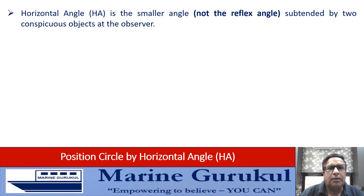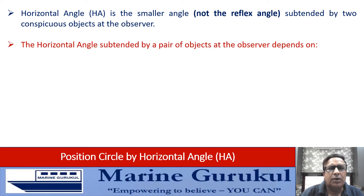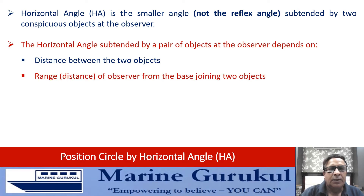The horizontal angle is the smaller angle, not the reflex angle, subtended by two objects at the observer. This means the value of the horizontal angle can never be more than 180 degrees. The horizontal angle subtended by a pair of objects at the observer shall depend upon the distance between the two objects and the distance or range of the observer from the baseline — that is, the segment joining the two objects.